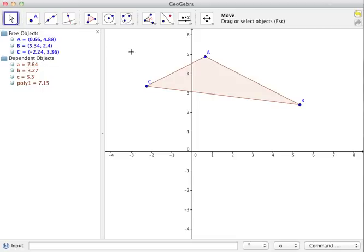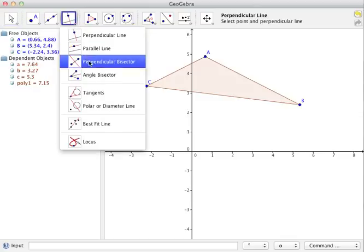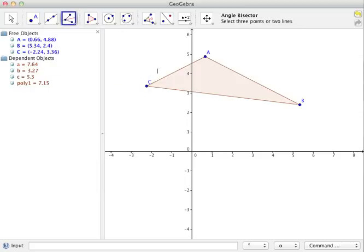It turns out that GeoGebra has a tool for that. If you go under the fourth tool item where it says perpendicular line and click on the little red dropdown, it'll give you the angle bisector tool. What the angle bisector tool will do is if you give it an angle, it'll give you the line that splits that angle into equal parts.